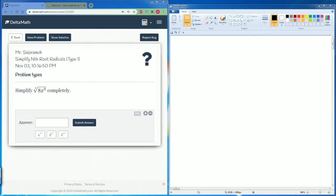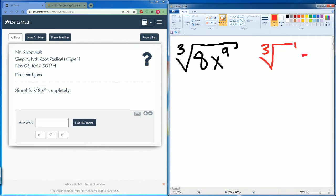Welcome, this is the DeltaMath tutorial simplifying nth root of radical type 1. It asks us to simplify the third root, because that's 3 here, of 8x to the 9. Understand that this implies a cube root, which means it's to the 1/3 power.